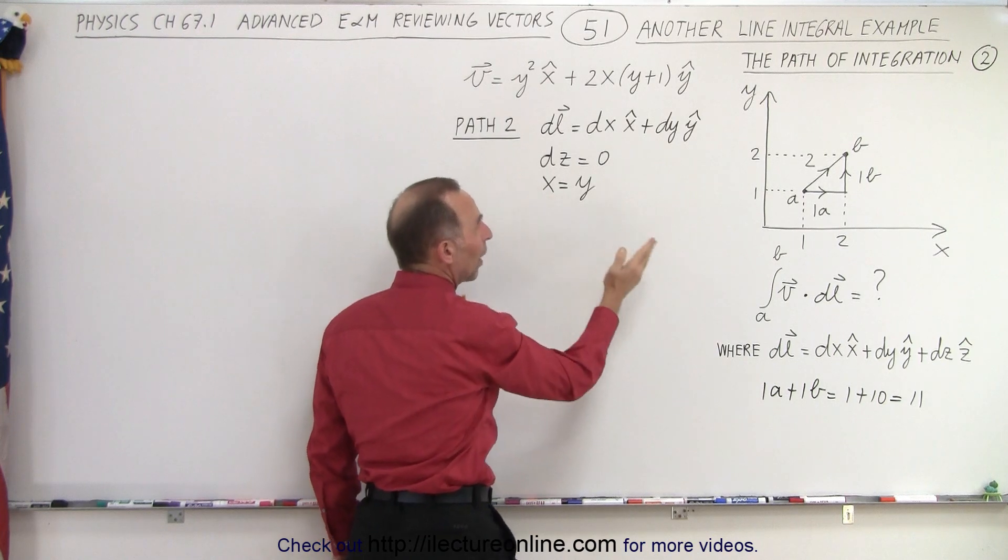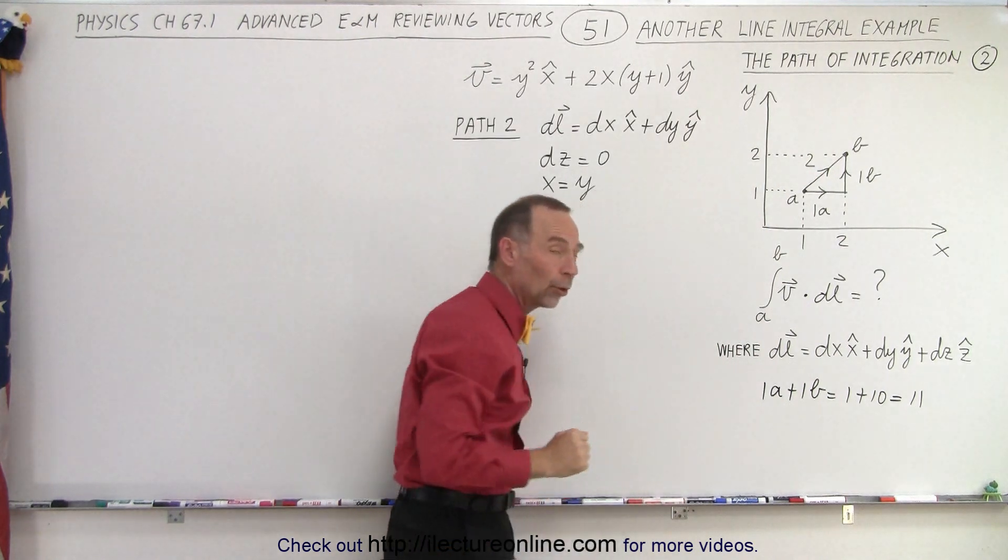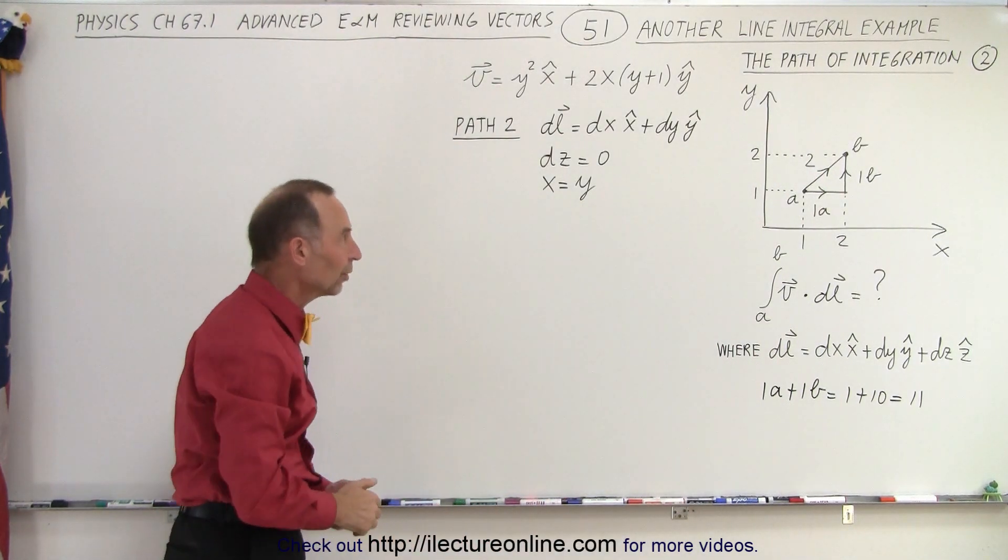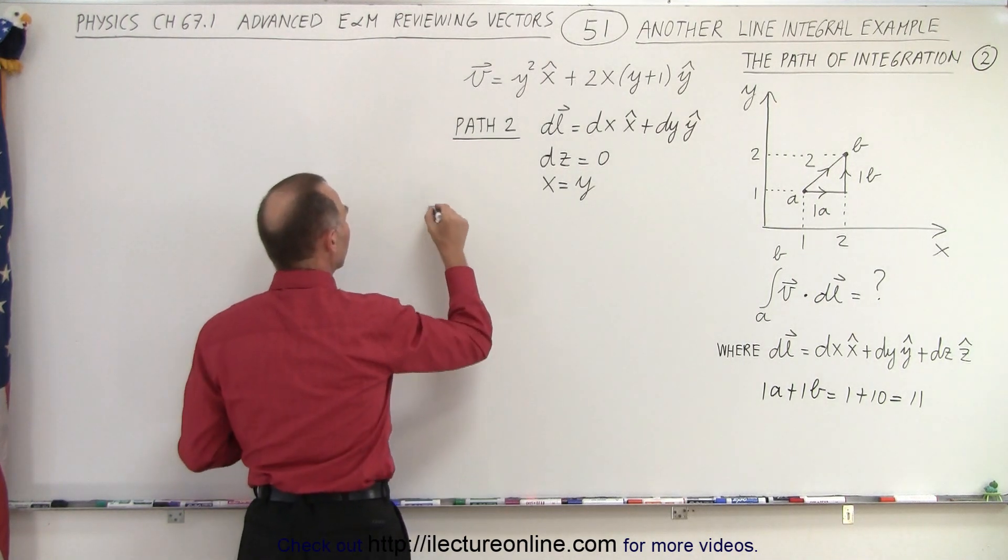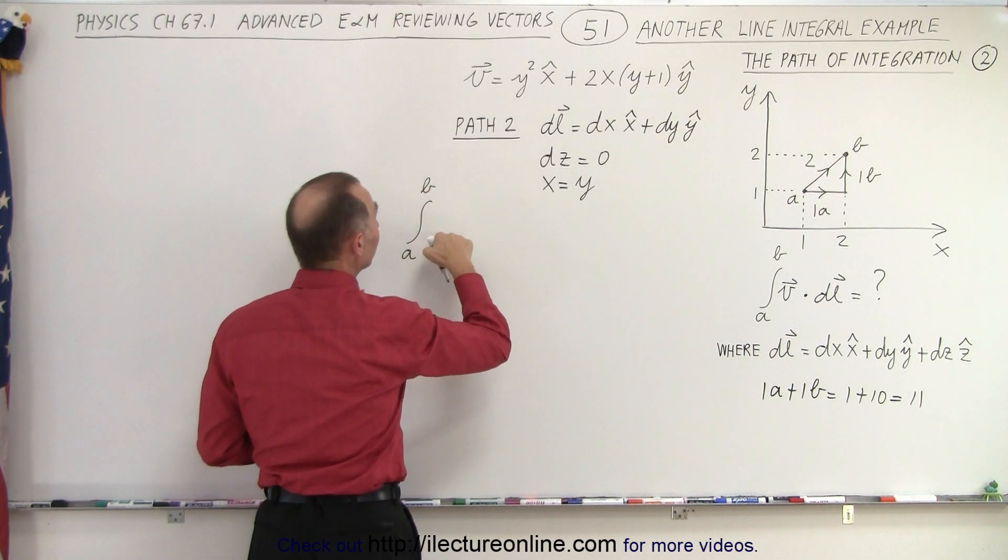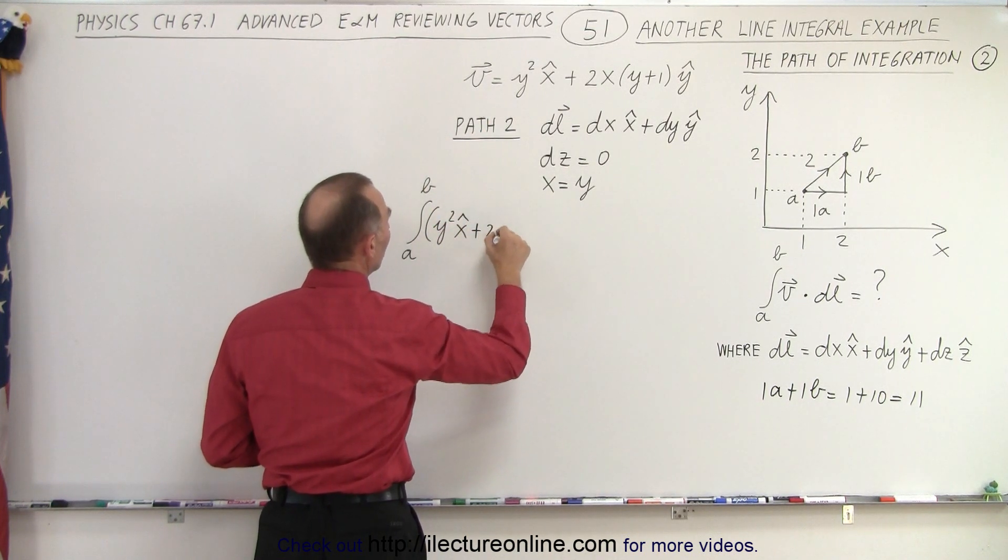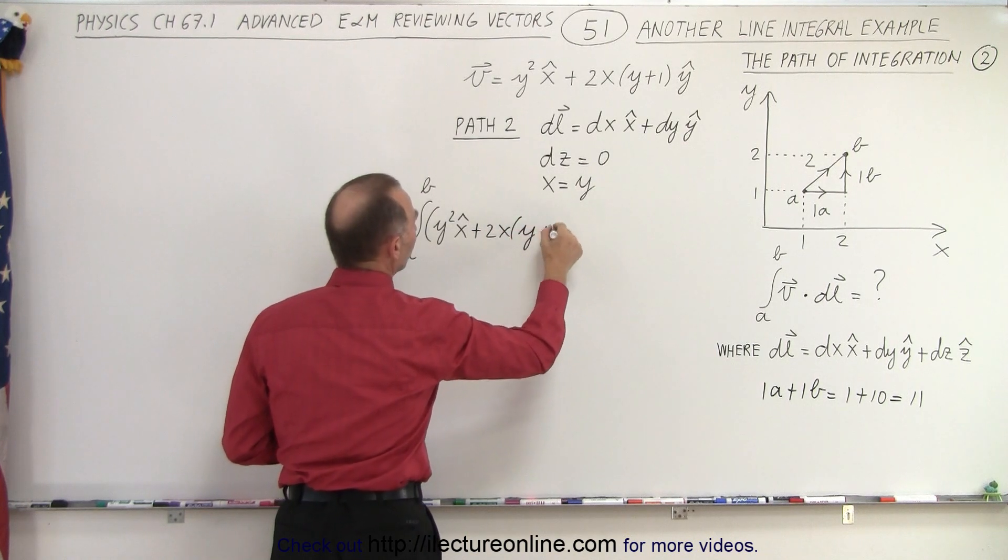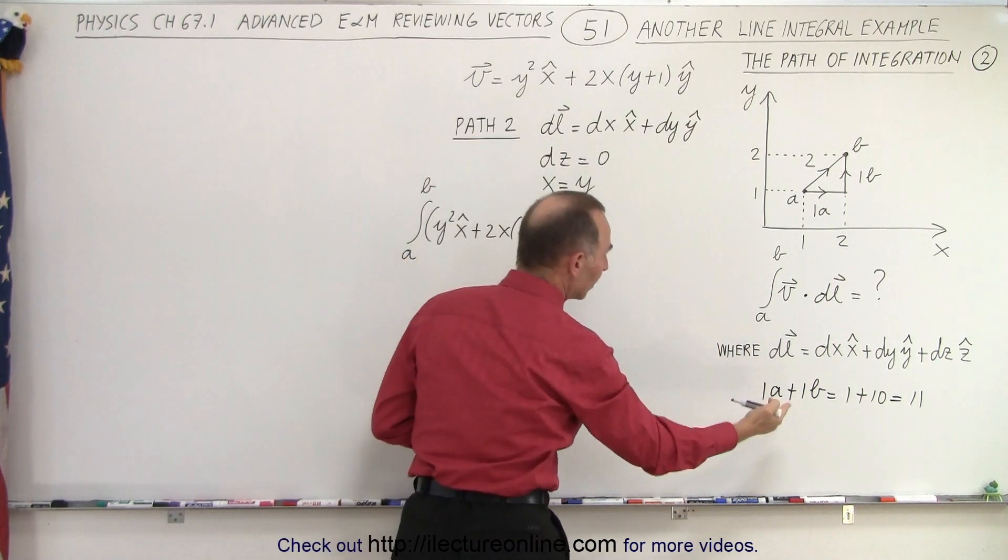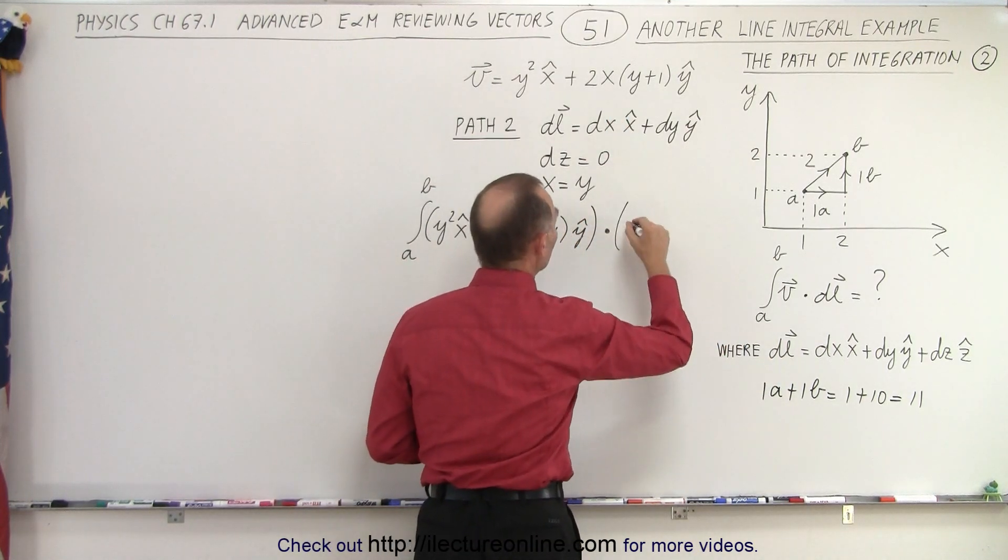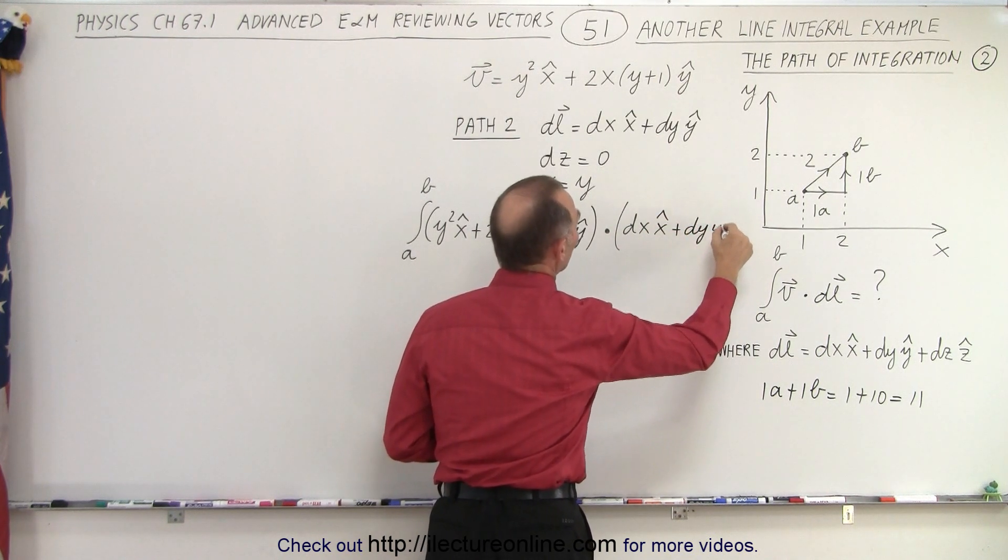We also know that x must equal y because along that path, you can see that that line, if you extended it, would go right through the origin. So that's the line y equals x. Let's go ahead and write down the integral. The integral from A to B is going to be equal to the vector V, which is defined right there: y squared in the x direction plus 2x times y plus 1 in the y direction. And then we're going to take dot product with DL.